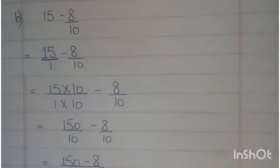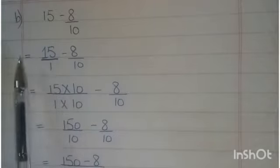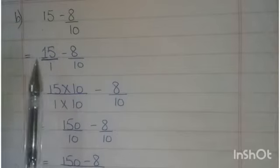Now next question number B: 15 minus 8 by 10. Firstly students, you convert whole number into the fraction form, so you write denominator 1. Sabse pehle jab bhi whole number ko fraction ki form mein convert karna hai students, aapne inki denominator mein 1 write karna hai. Clear. Now this one is unlike fraction. We make like fractions.